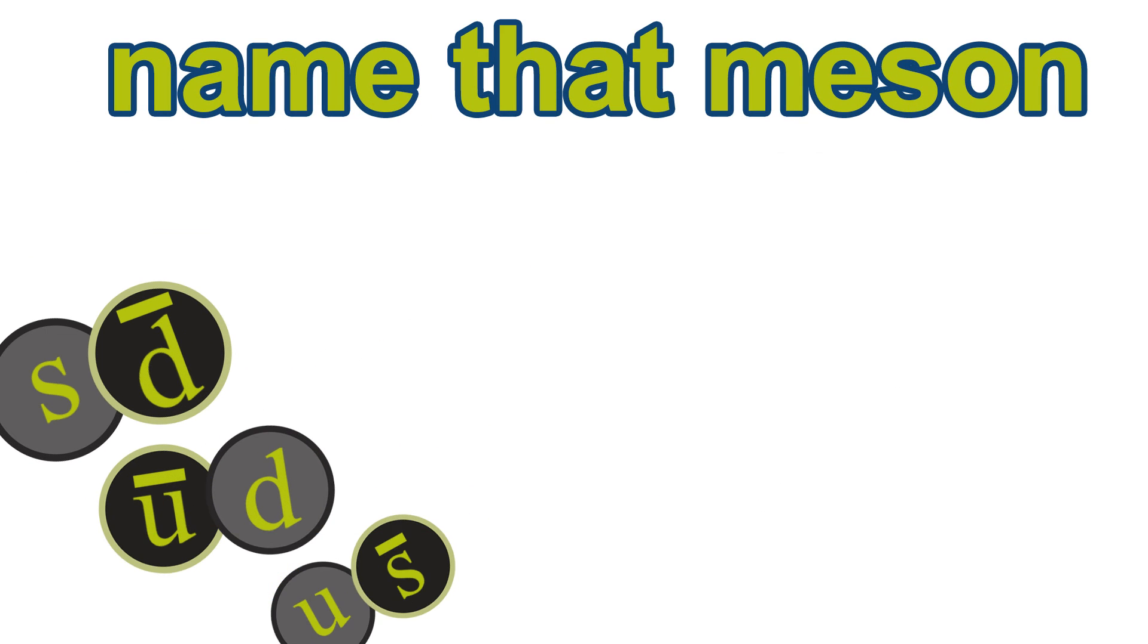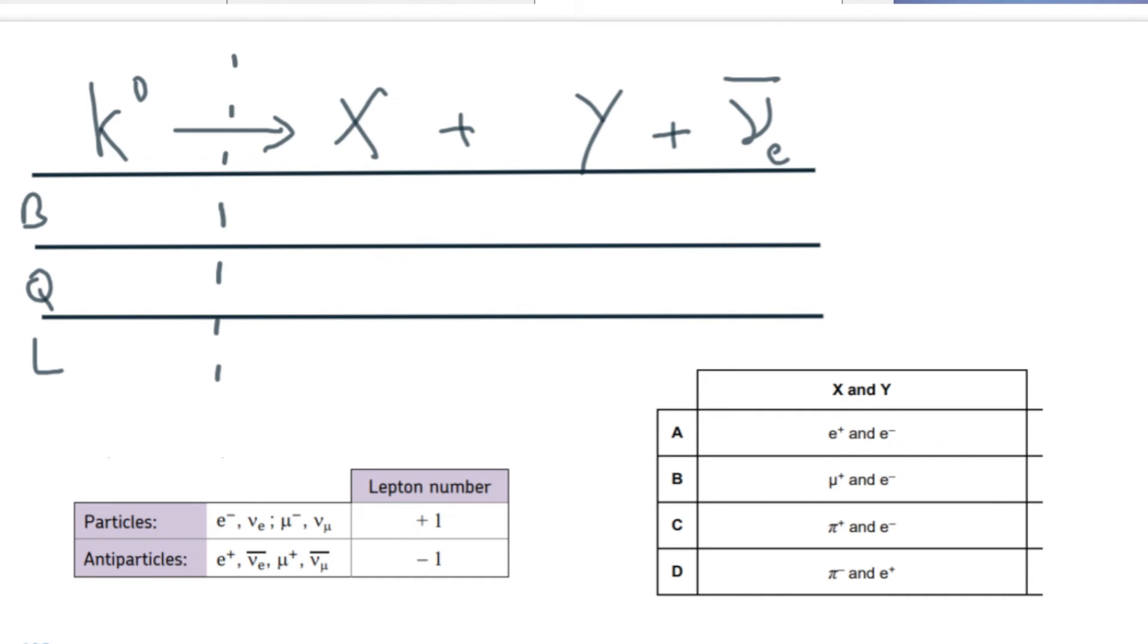For this example you might feel happier if you know a bit more about meson structure. In our last example we have to find particles X and Y - this is a multiple choice question. The baryon number for a kaon is zero because it's a meson. We don't know what it is for X and Y but we know a neutrino is not a baryon, so that's zero. The kaon has no charge and the anti-electron neutrino has no charge either. The meson is not a lepton and the anti-neutrino has a lepton number of minus one.